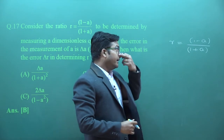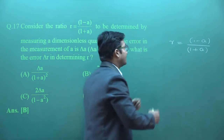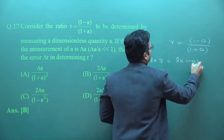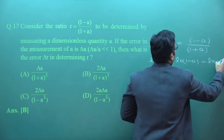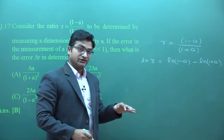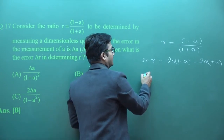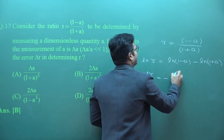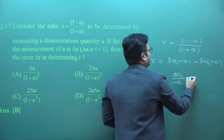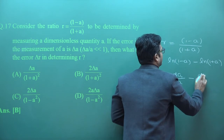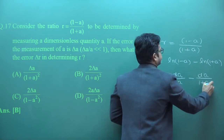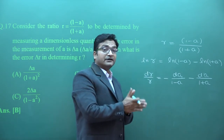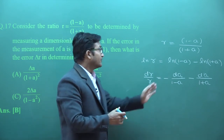We take the natural log of both sides: ln R = ln(1 − A) − ln(1 + A). Then we differentiate: dR/R = −dA/(1 − A) − dA/(1 + A). When calculating error we take the maximum value, so we ignore the minus sign.